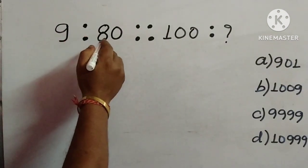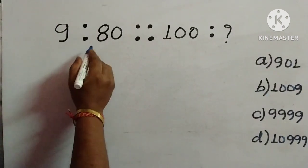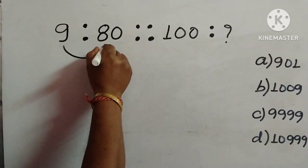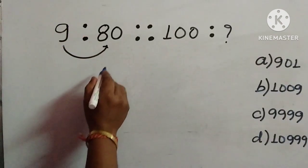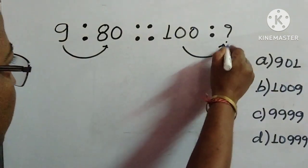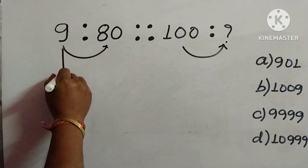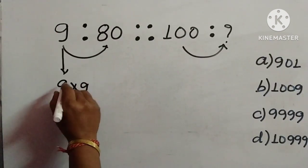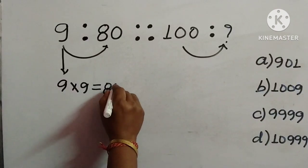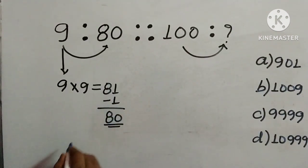Next: 9 is to 80 equals 100 is to what? Four options are given. As I have explained in earlier videos, we first find the relation between the two numbers — how we can derive 80 from 9. If we square 9: 9 into 9 is 81. Since we need 80, we subtract 1. So the rule is: square the number and subtract 1.